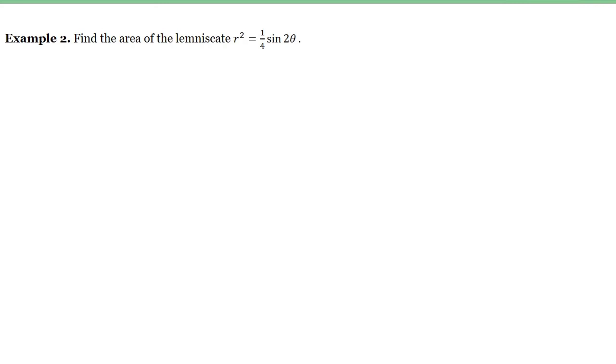So the first thing that we are going to do is, of course, express this in terms of r. Since we have the equation r squared is equal to one-fourth sin of 2 theta, so this should be r is equal to take the square root, so that square root of one-fourth is one-half, and we have here the square root of sin of 2 theta.